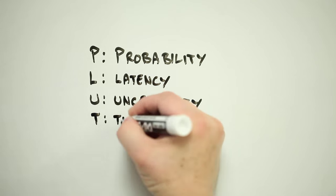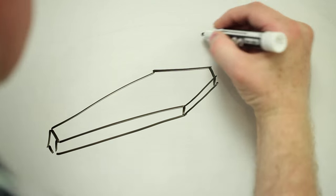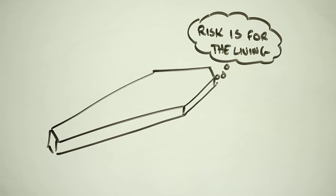After U comes T, and T is for trade-offs. Wouldn't it be great if we could get rid of all risk? Sadly, this will never happen. Apart from this making life rather boring, risk is a byproduct of being alive. You can't have one without the other.